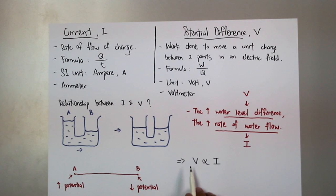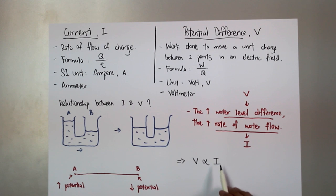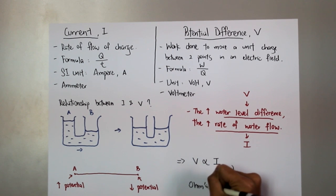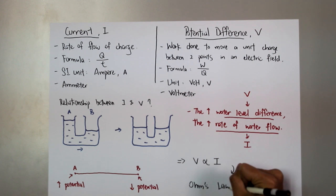When the potential difference is high, the current will be high. And when the potential difference is low, the current will be low as well. This supports what states in Ohm's law.